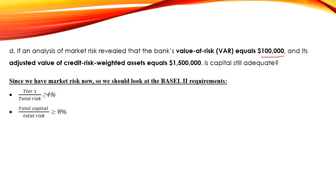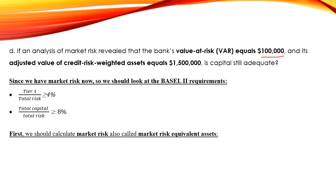According to Basel 2, Tier 1 over total risk must be higher than 4%. Total capital divided by total risk — which includes credit, market, and operational risk (though in this exercise we do not have operational risk) — must be higher than 8%. The first step is to calculate the market risk equivalent assets.